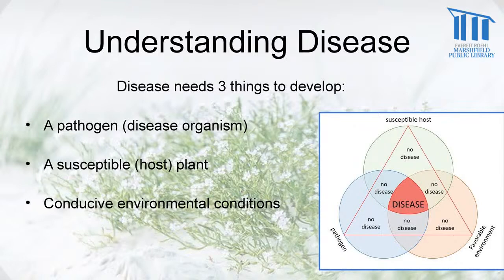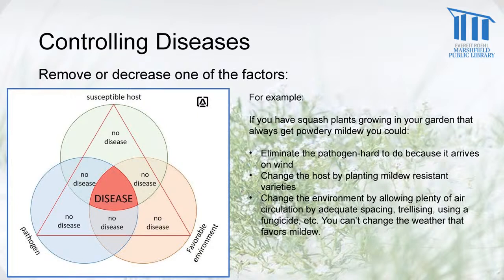Some ways we can use this triangle to control disease is to take away one of the three things. If you have squash plants that always get powdery mildew, you could eliminate the pathogen — but that's hard because it comes in on the wind or from the soil. You can change the host by planting a mildew-resistant variety, or change the environment by allowing plenty of air circulation, spacing plants far enough apart, letting them grow on trellises, or using a fungicide. But you can't change the weather, so in some years you're going to get it no matter what.